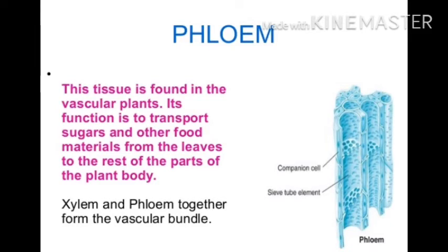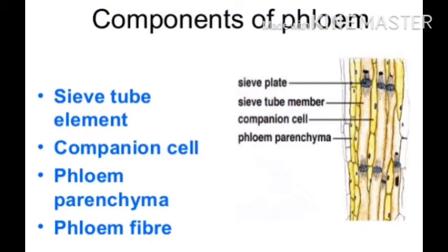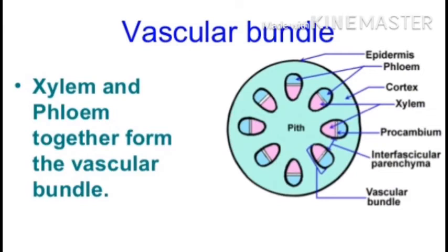It also helps in replacing the water lost during transpiration and photosynthesis. The components of xylem are: tracheids, vessels, xylem parenchyma, xylem fiber. The function of phloem is to transport sugars and other food materials from the leaves to the rest of the plant body. Xylem and phloem together form a vascular bundle to transport materials within a plant. Components of phloem: sieve tube elements, companion cells, phloem parenchyma, phloem fibers.